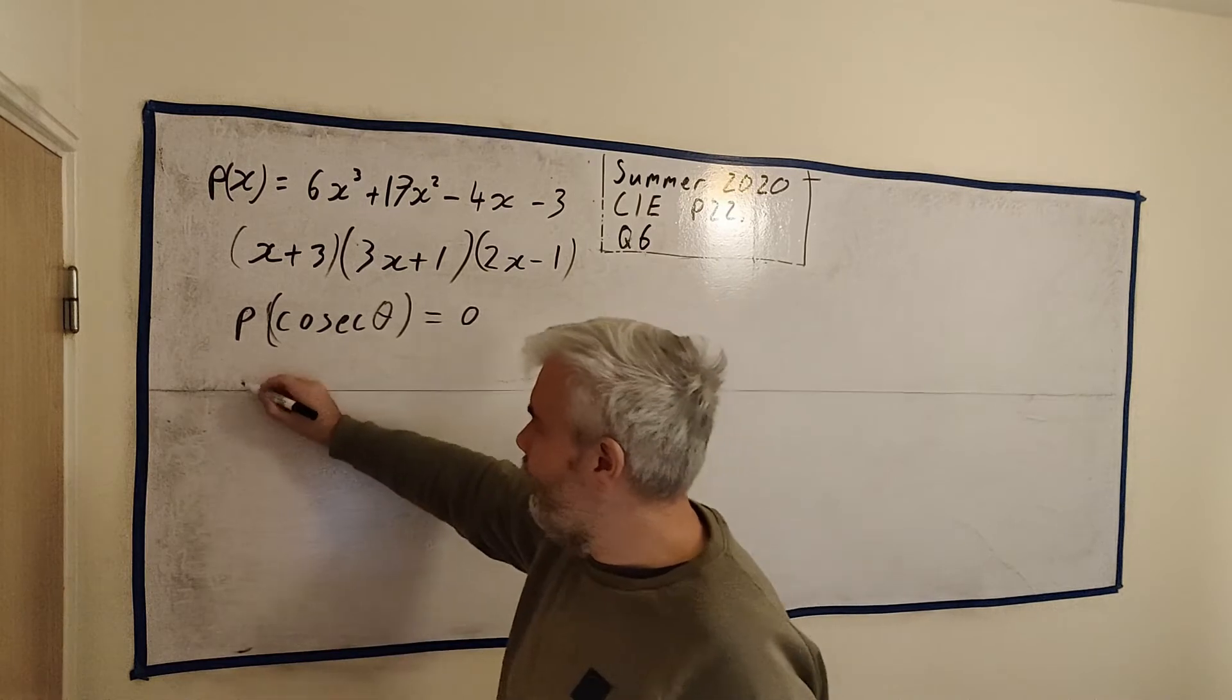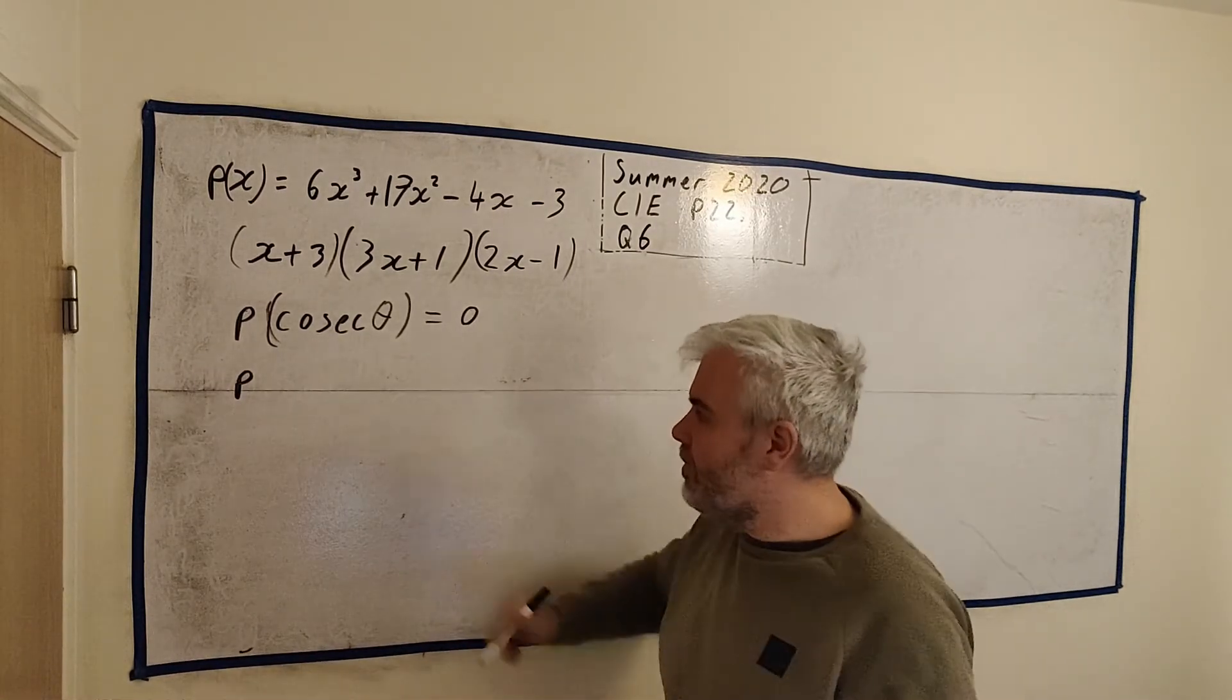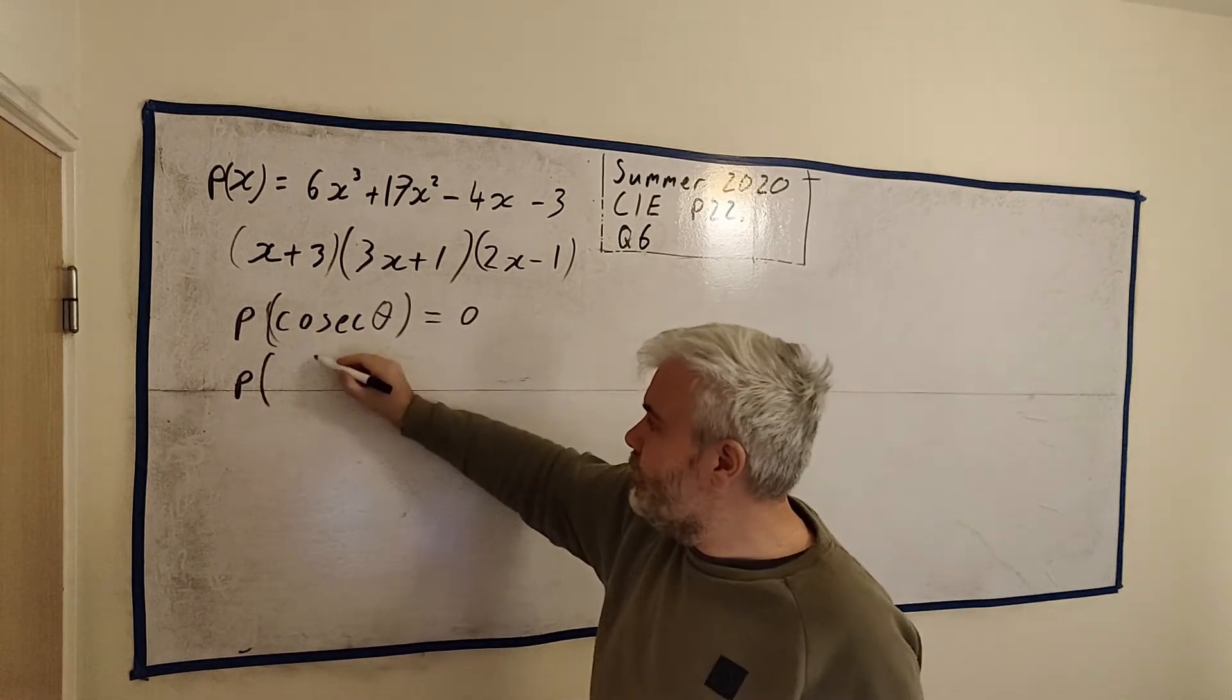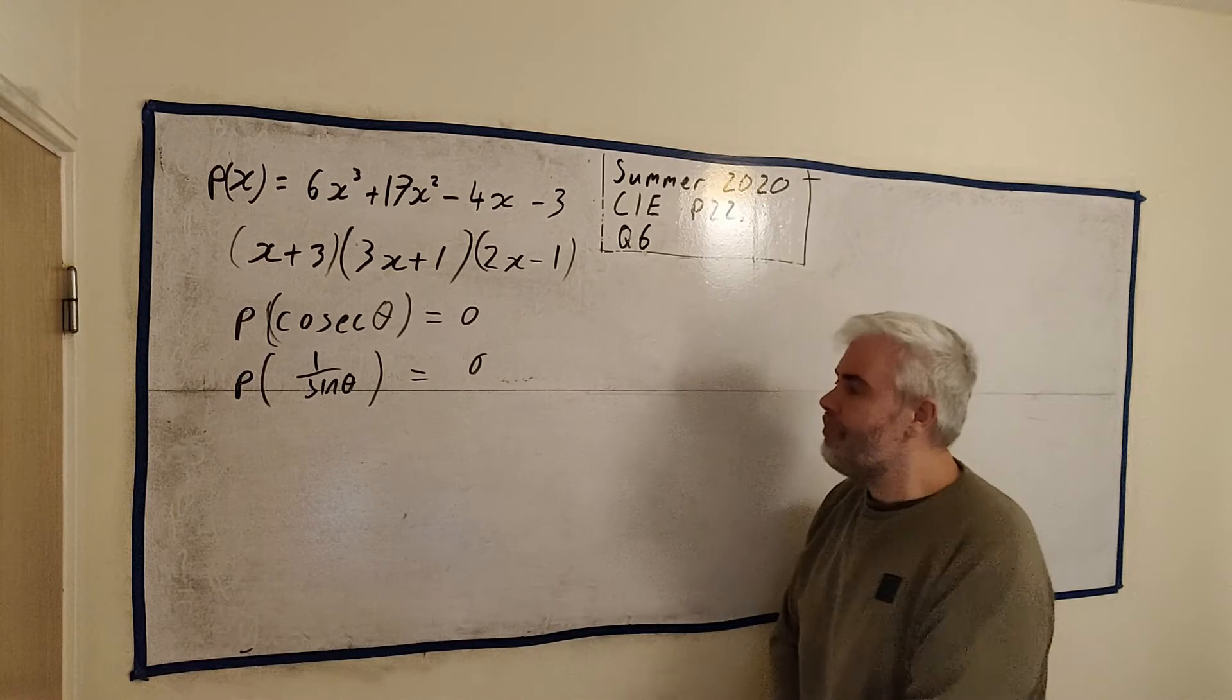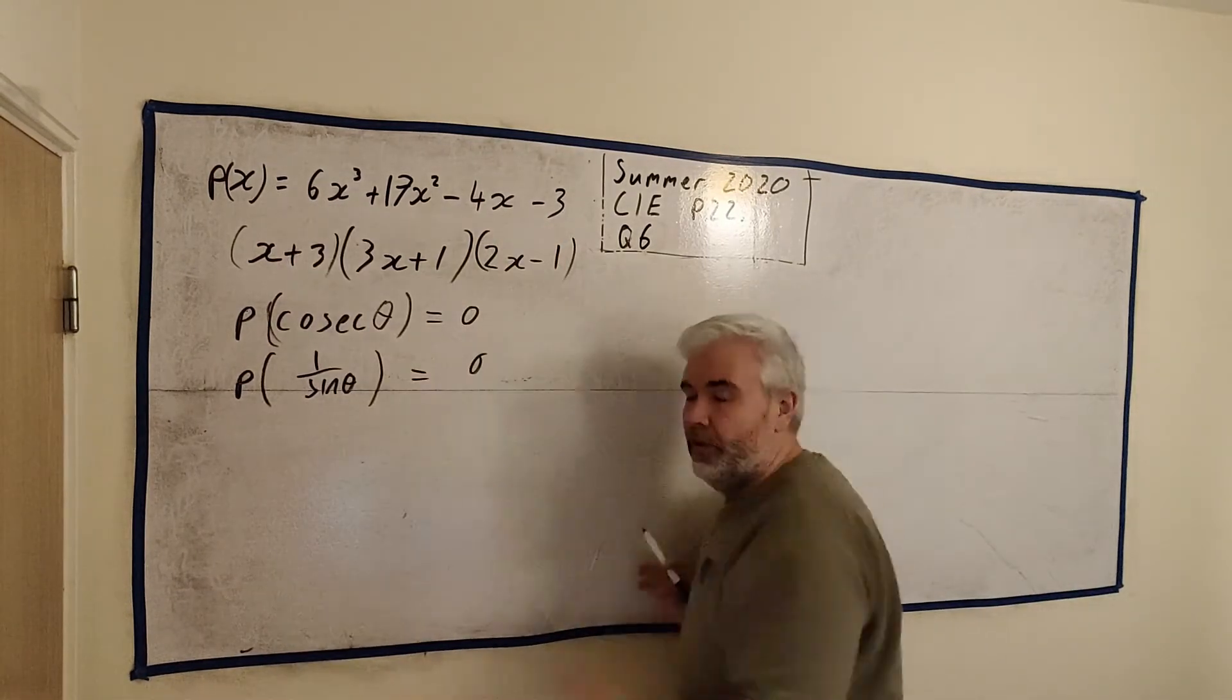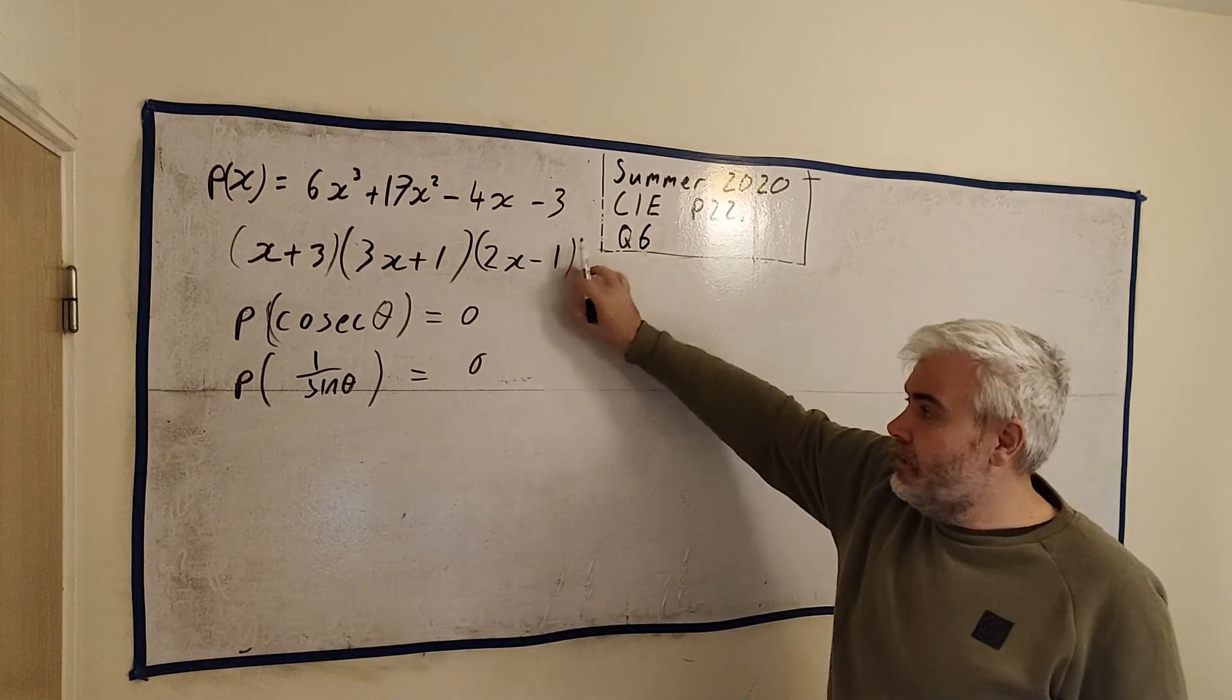The second thing is a lot of students aren't used to cosec, especially depending on where you are in the world studying maths. This is just 1 divided by sin theta. And then that's equal to 0. We just need to fill this in to this long polynomial. We don't need to do that either, because we already have it factorized.